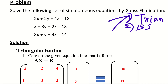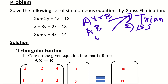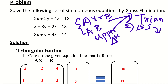One is triangularization and the second one is back substitution. In the first step, triangularization, we take the equation AX equal to B and convert it to an upper triangular matrix. The second step is back substitution.